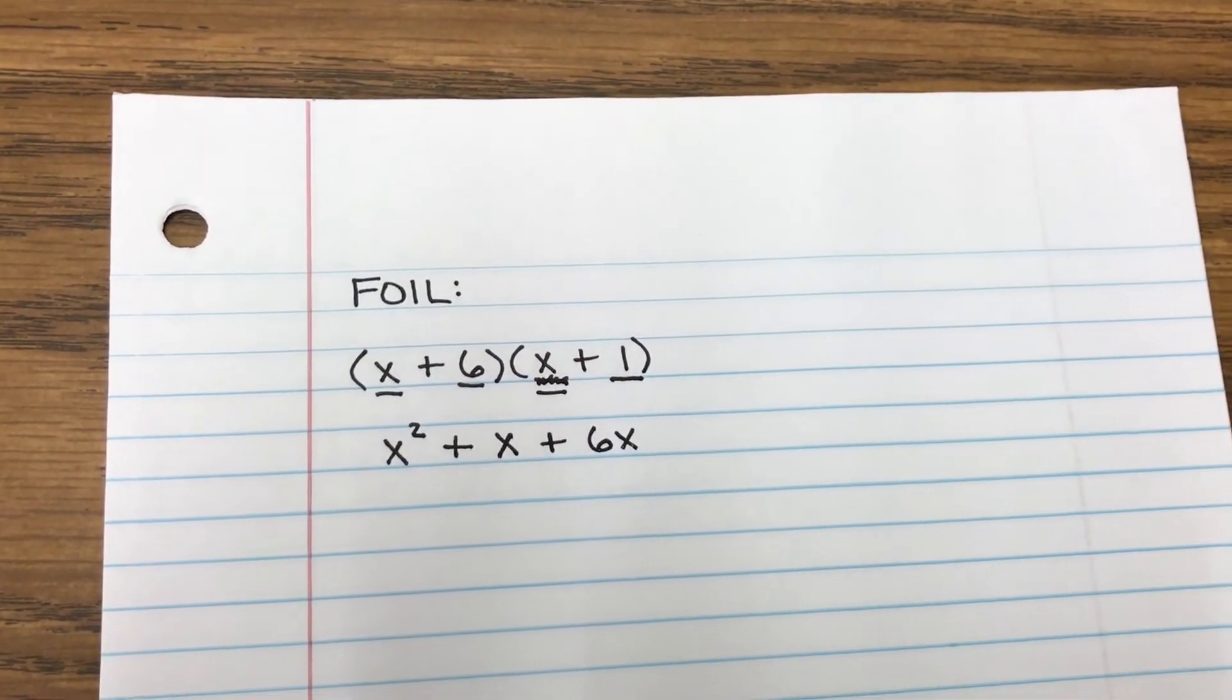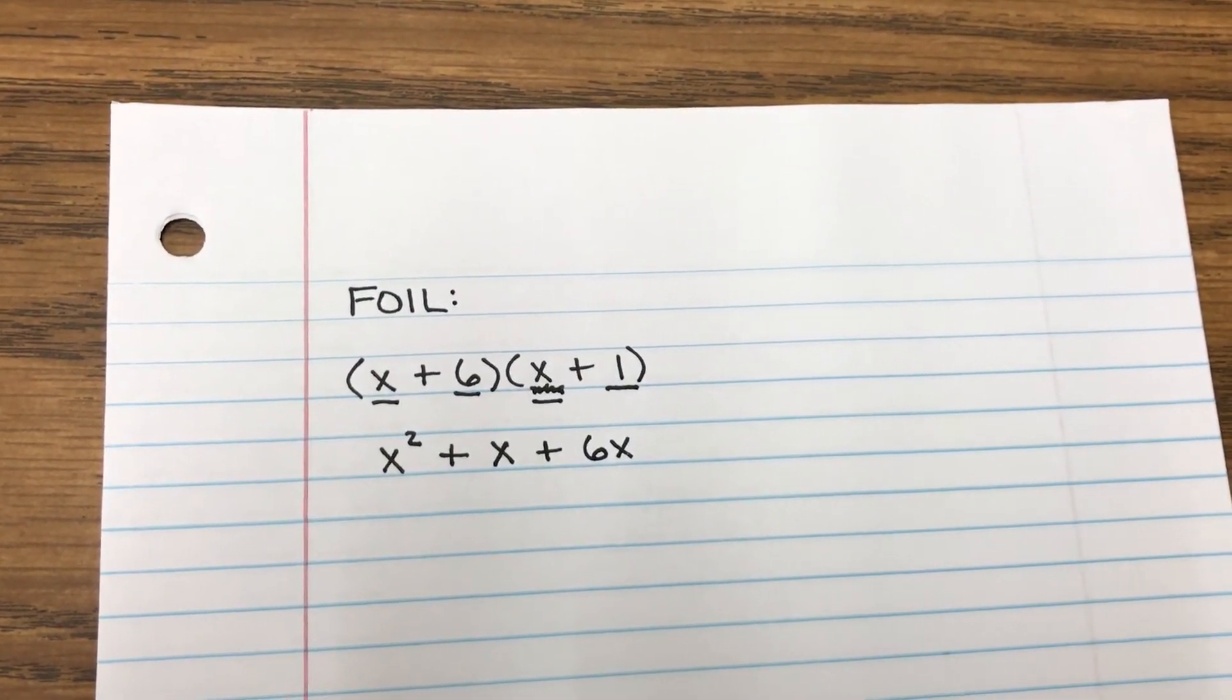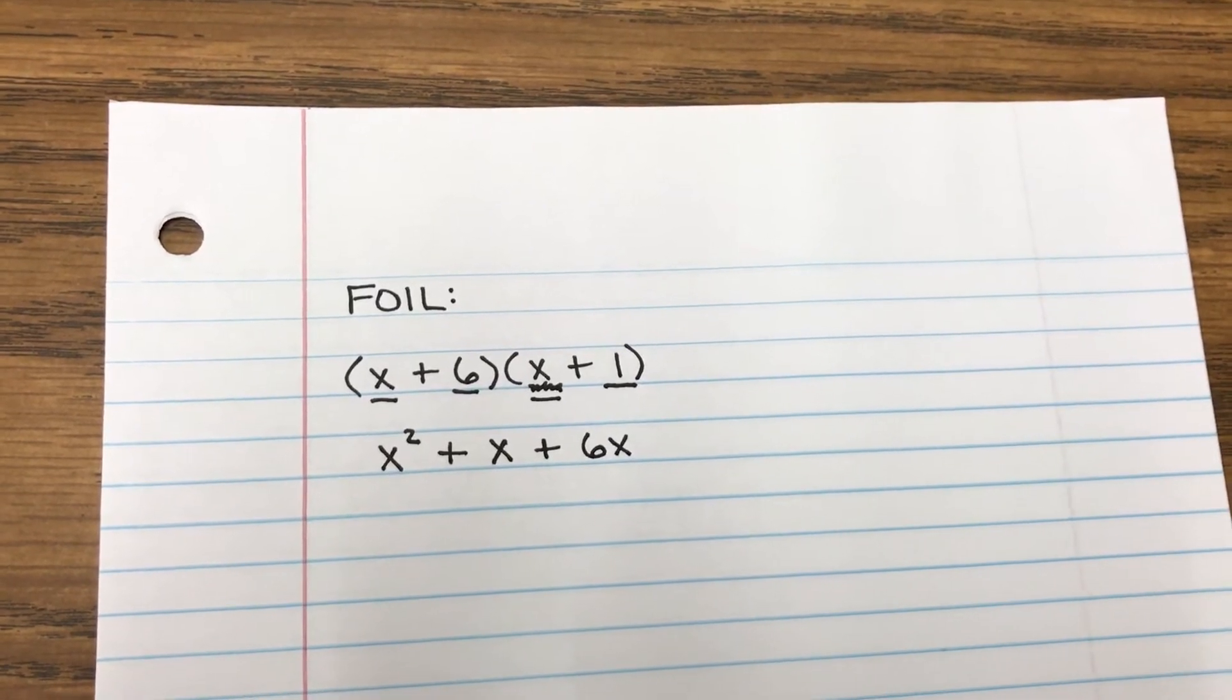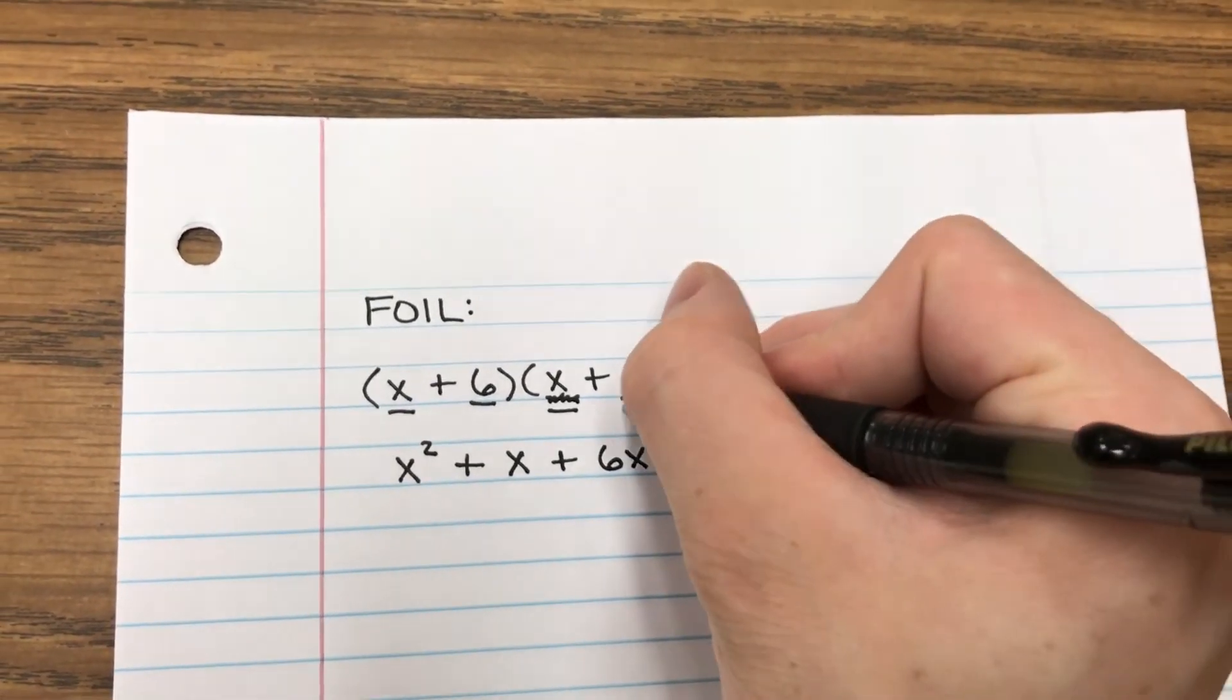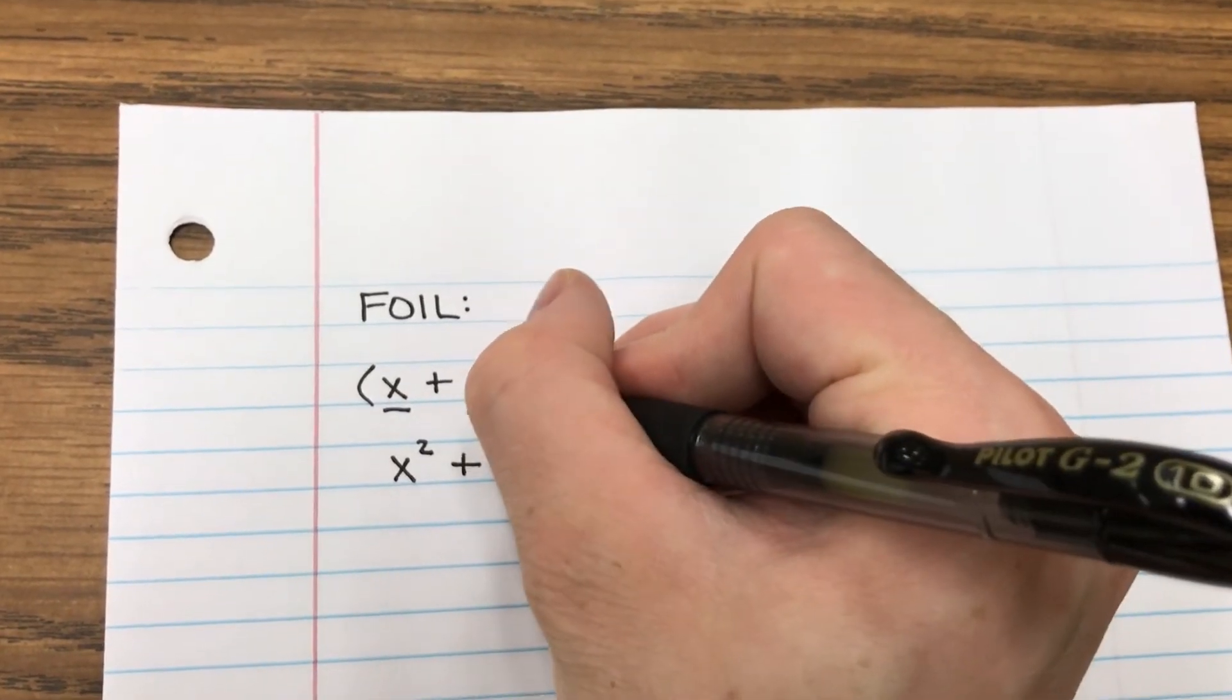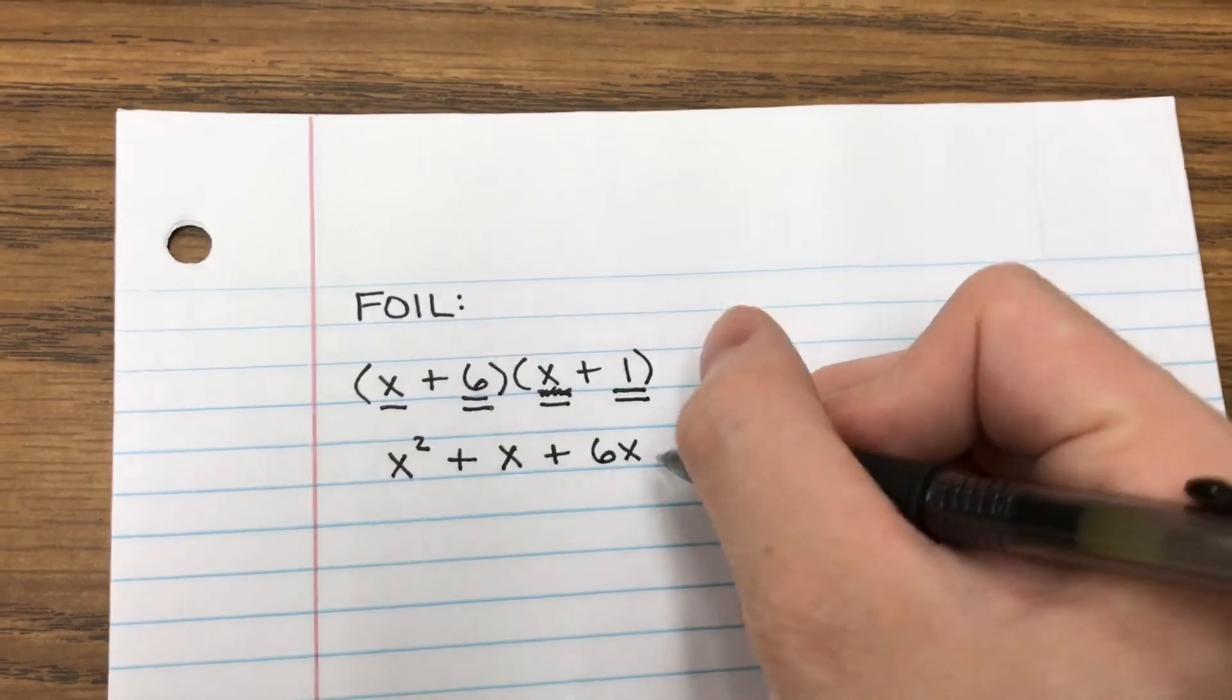Okay, the L stands for last, so what I'm going to do is, I'm going to put a double underline under my last two terms. These are going to be on the right sides of the parentheses. So let me get this 1, and this 6. And 1 times 6 is 6.